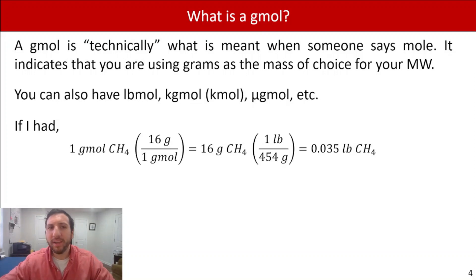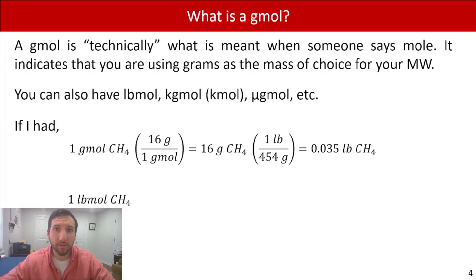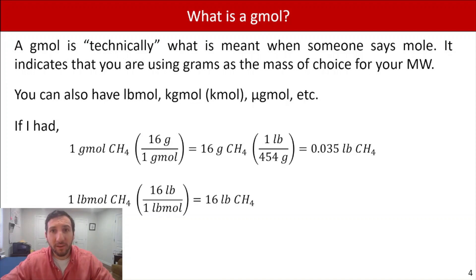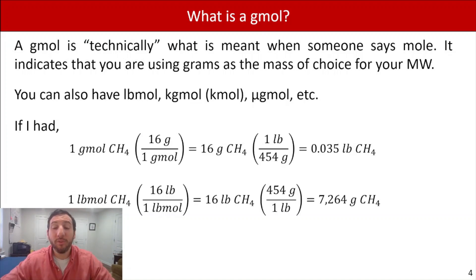Now if I do the same situation except I have a pound mole of methane instead, what you'll notice is when I multiply by the molecular weight, instead of 16 grams per gram mole, I have to use pounds because of that preceding term in pound mole. So I multiply by 16 pounds per pound mole, and now instead of 16 grams of methane, I have 16 pounds of methane. When we convert from pounds into grams, you'll see that we actually have 7,264 grams of methane.